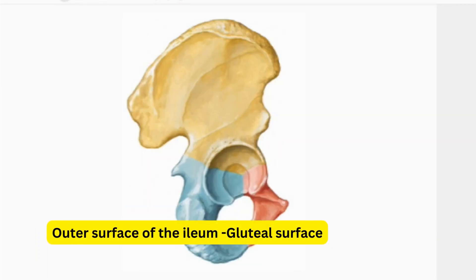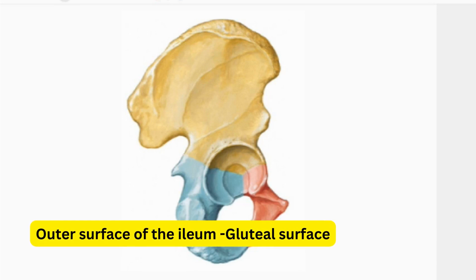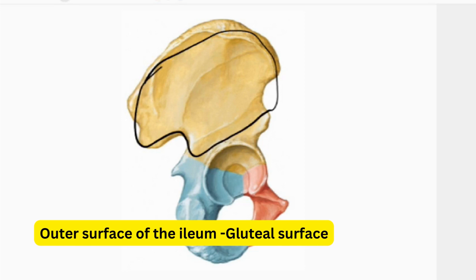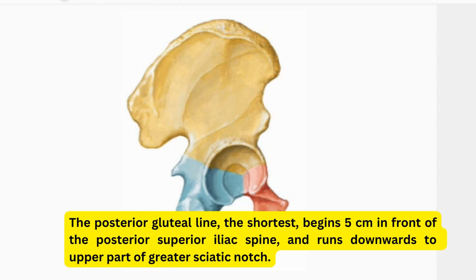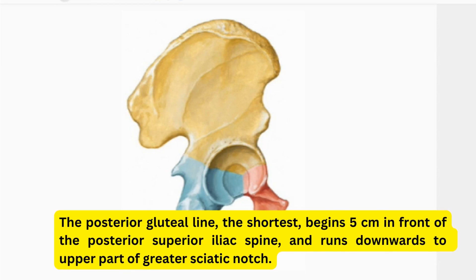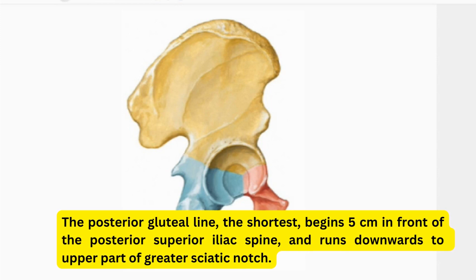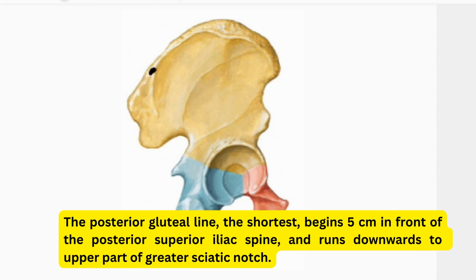Now we will identify the surfaces. The outer surface of the ilium is known as the gluteal surface. In this surface you will observe the gluteal lines. The posterior gluteal line is the shortest one, starting from 5 cm in front of the posterior superior iliac spine and running downward to end at the upper part of the greater sciatic notch.